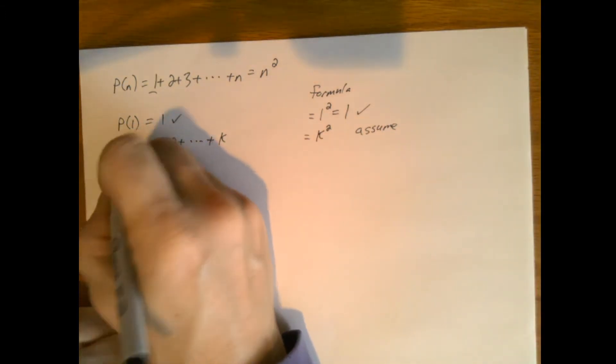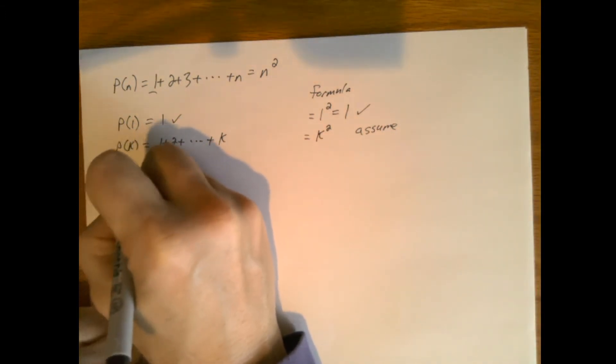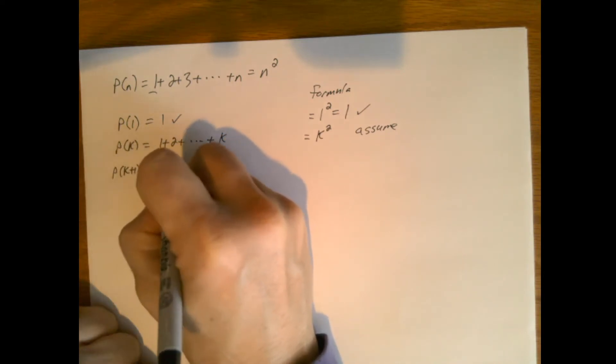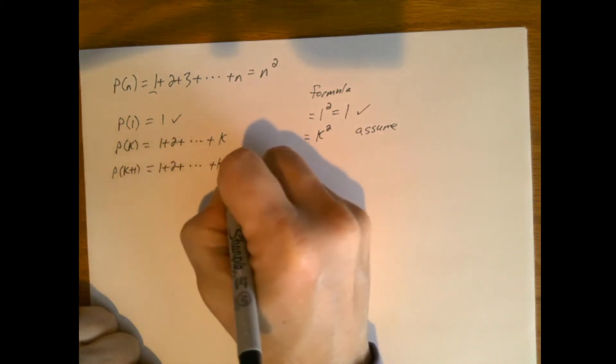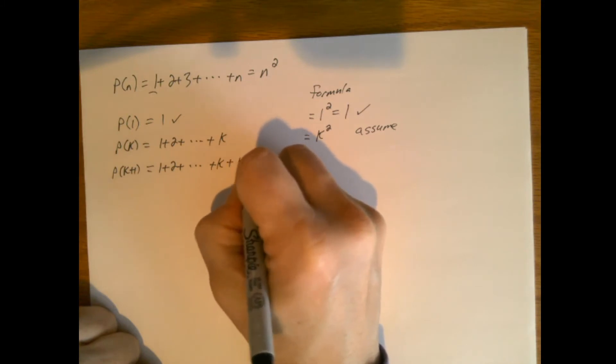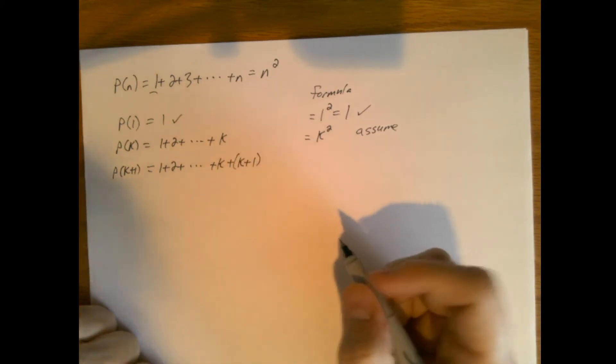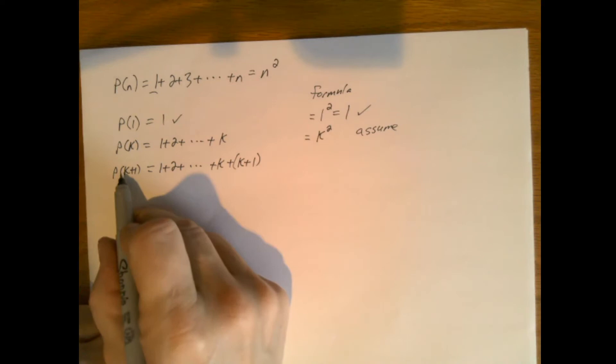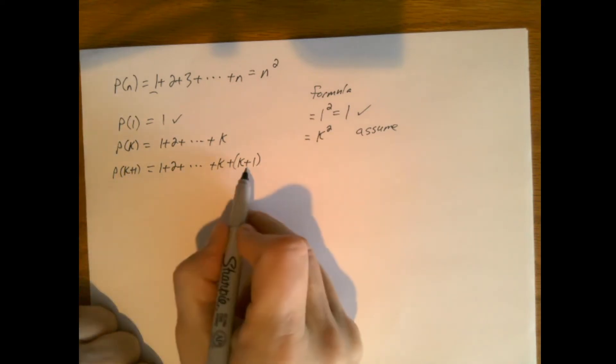And so then what is P(k+1)? Well that's equal to 1 plus 2 plus dot dot dot plus k plus k plus 1. That part's true, right? The first k plus 1 elements, the summation of those would be this.